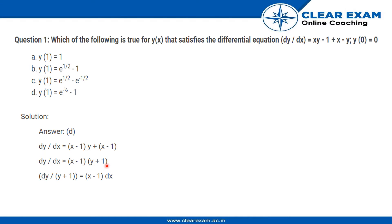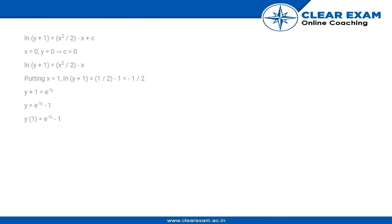Separating the x and y components, we have dy/(y + 1) = (x - 1) dx. Integrating both sides, we get ln(y + 1) = x²/2 - x + constant c.